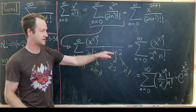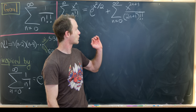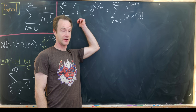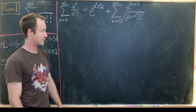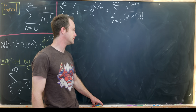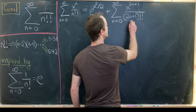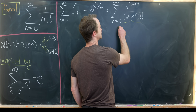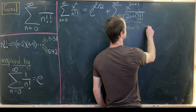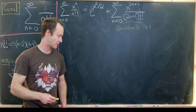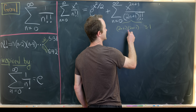So let's replace this first sum by e to the x squared over 2 and start working on the second sum. We need to work with all of the odd terms. We'll do this by first filling in all of the gaps of 2n plus 1 double factorial, which equals 2n plus 1 times 2n minus 1, all the way down to 3 times 1. Now let's include all of the even numbers.